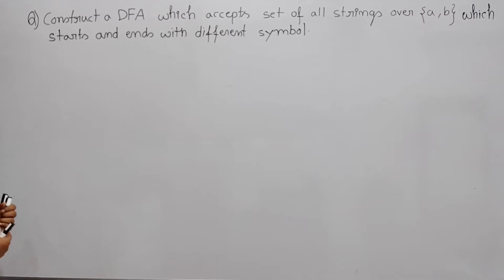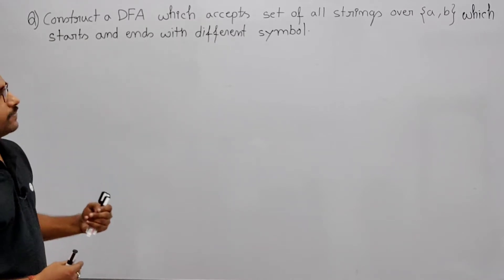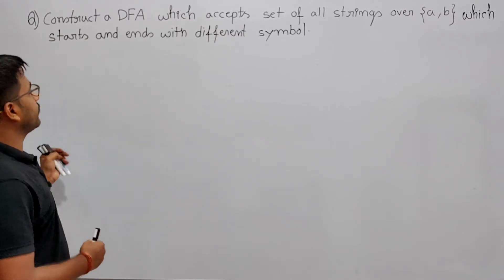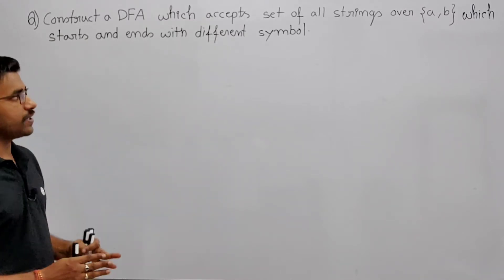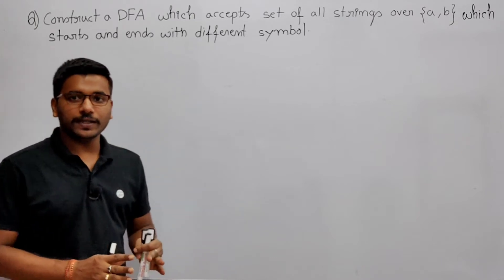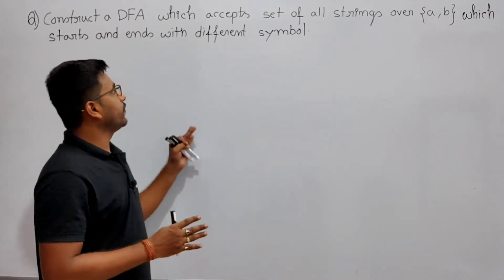Now see the question. It is saying that construct a DFA which accepts a set of strings over the alphabet which starts and ends with a different symbol.